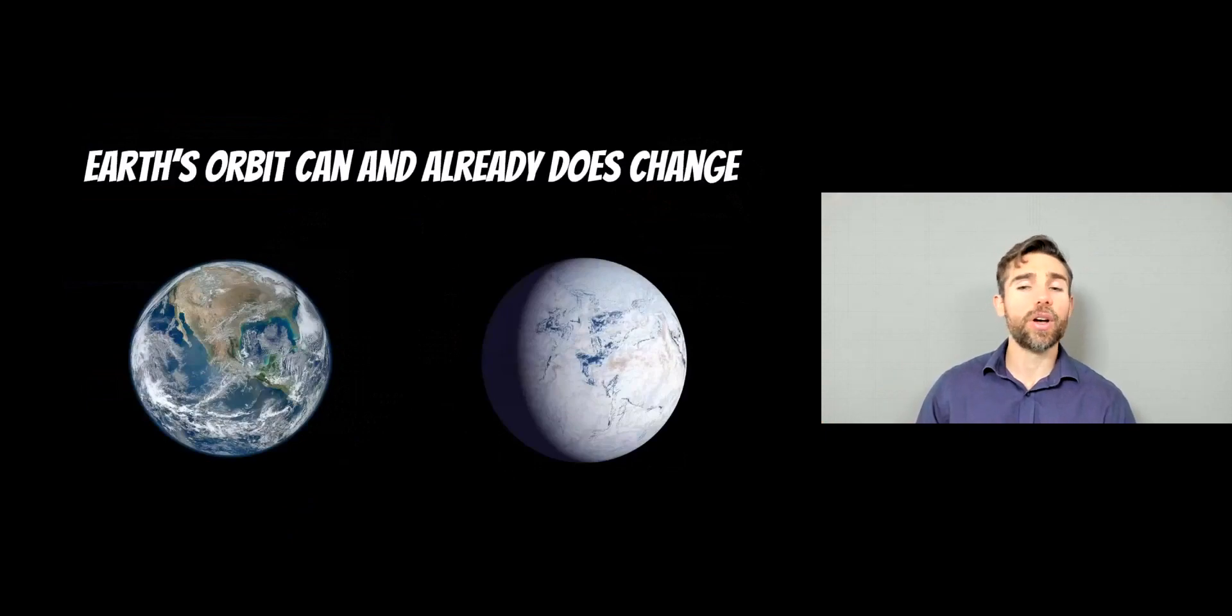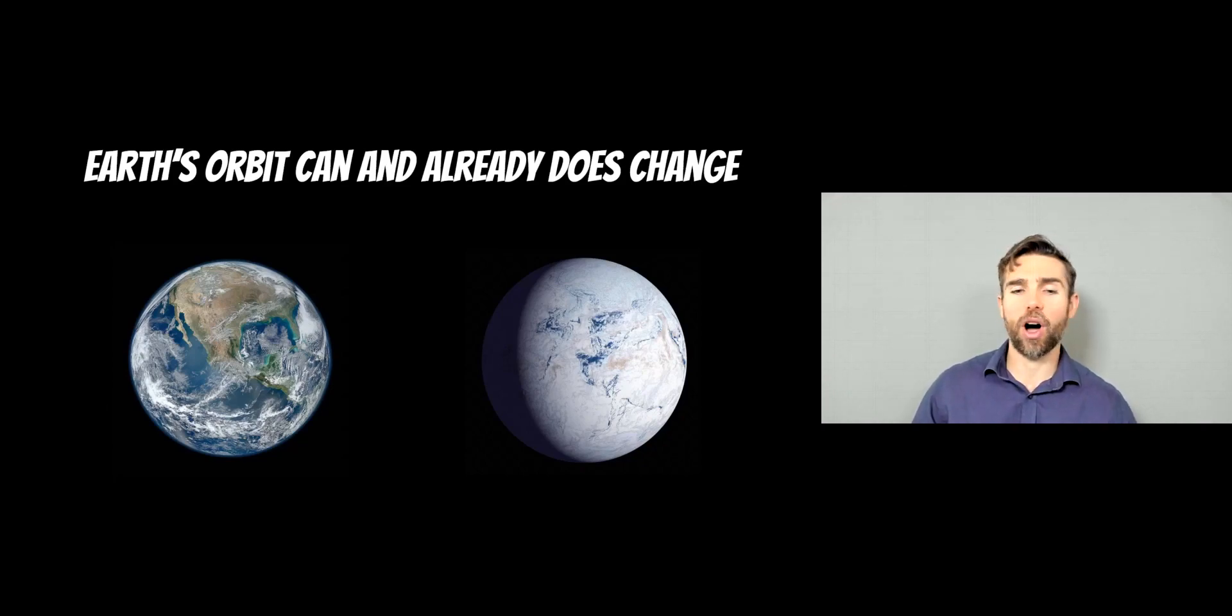So the point really to make here is that Earth's orbit can and already does change. But the time scales which these occur on are enormous. So even a stellar flyby that may destabilise orbits is a long way off. And we actually understand the dynamics of the stars nearby to us. And this is unlikely to be a problem in the immediate future. Not a problem for us anyway.